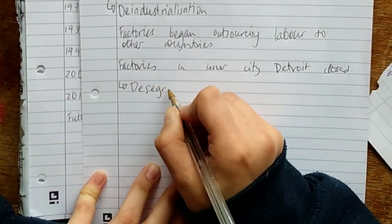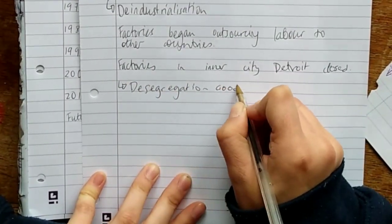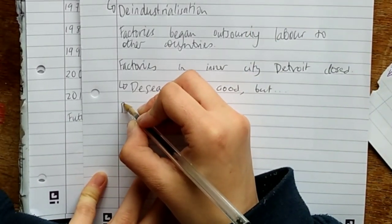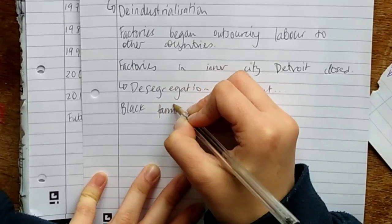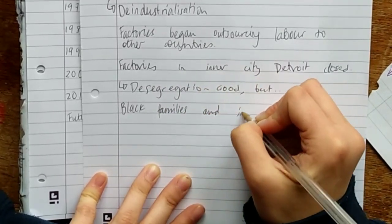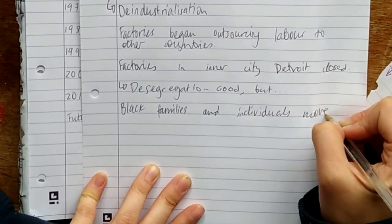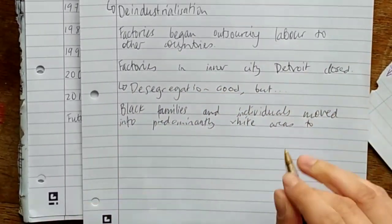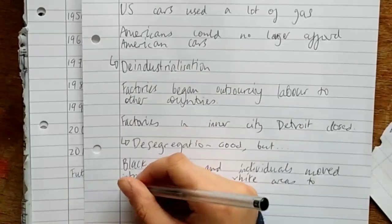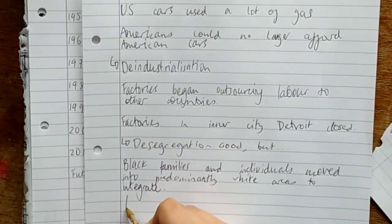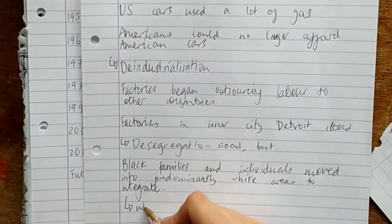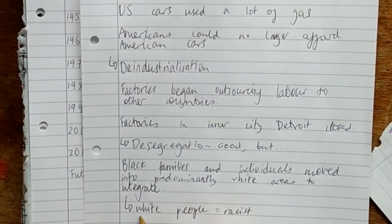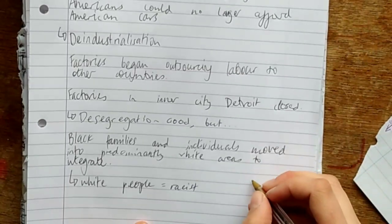Another thing was desegregation in the 50s and 60s. Official segregation laws were dropped. Black people moved to areas that had been predominantly white because now it was legal to do so. They were trying to integrate and make a better place for everyone. Unfortunately, this led to racial tensions because white people are racist. A lot of white people migrated to the suburbs.